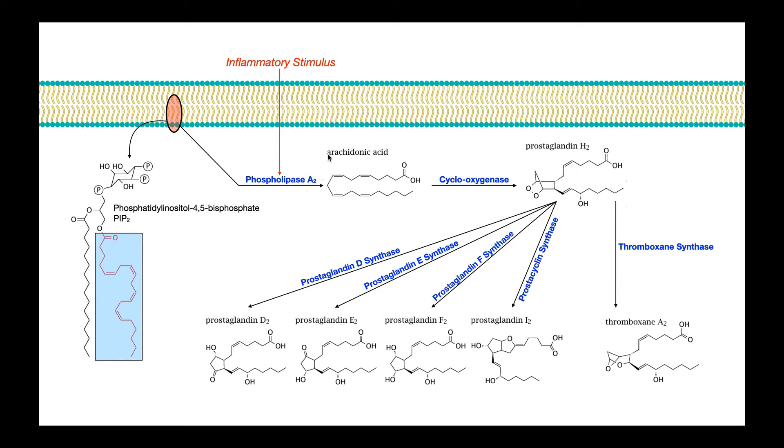Now phospholipase A2, as we said, is bound in the plasma membrane of the cell. The remainder of these enzymes, generally speaking, are going to be in the membrane of the smooth endoplasmic reticulum. So cyclooxygenase is going to be in the smooth ER membrane. Arachidonic acid will have to travel there through the cell.